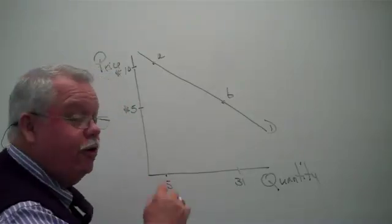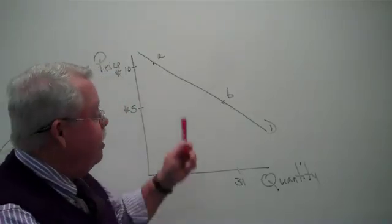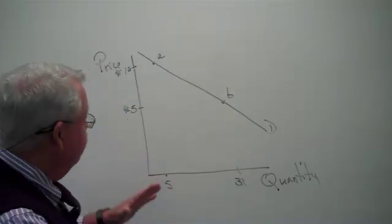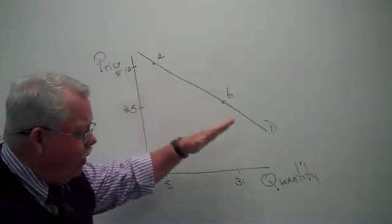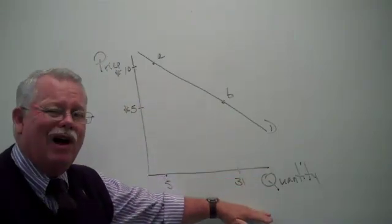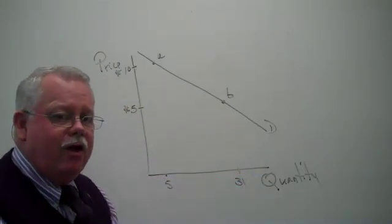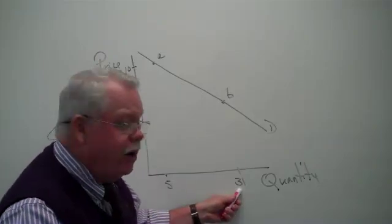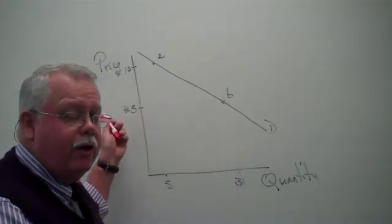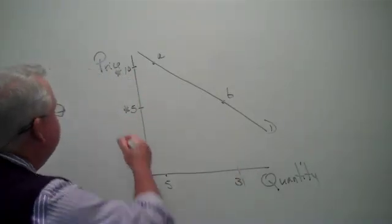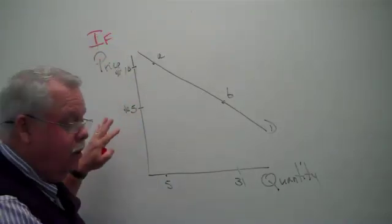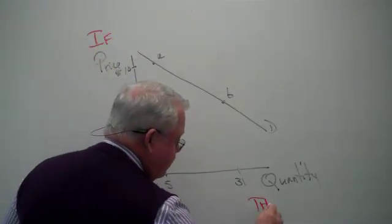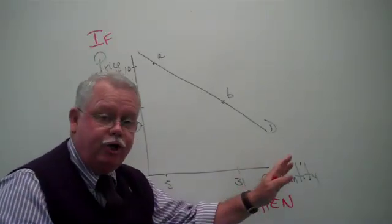Critical to us in our terminology is to say two things. First, we always look at the price first and then say, what will that do to the quantity people buy? We don't look at it the other way. We don't say if the quantity is this, then the price would be that. No. Read it this way. If the price is some level, then people will buy so much.